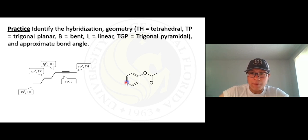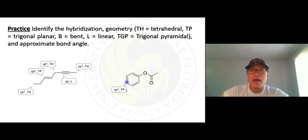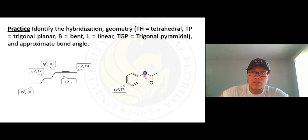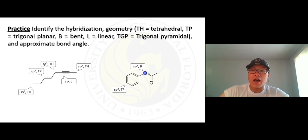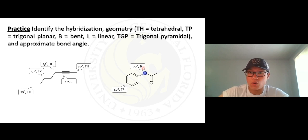This next one — how many things around it? One, two, and three — so it's sp2 hybridized and trigonal planar, about 120 degrees. Now watch out for this oxygen — it has two lone pairs. Count around it: one, two, and two lone pairs — three and four — that's sp3 and the geometry is bent. The electronic geometry is tetrahedral, but you can only see the bonds, so it's bent with a bond angle less than 109.5 degrees because the lone pairs push the two bonds downward.